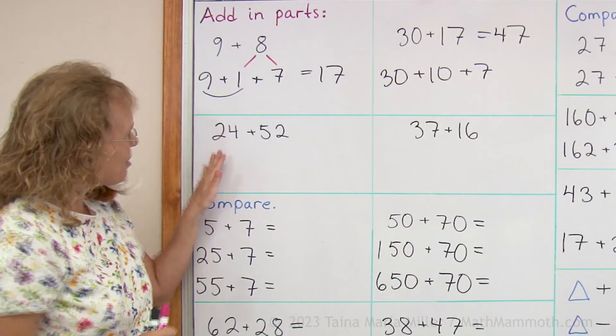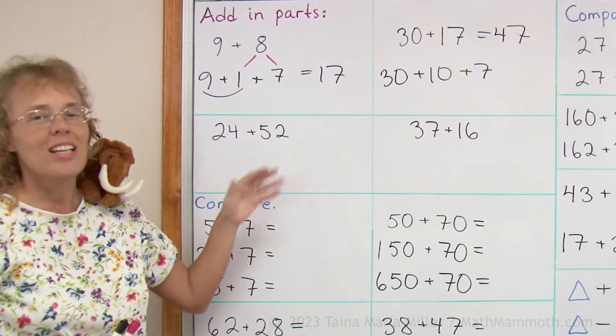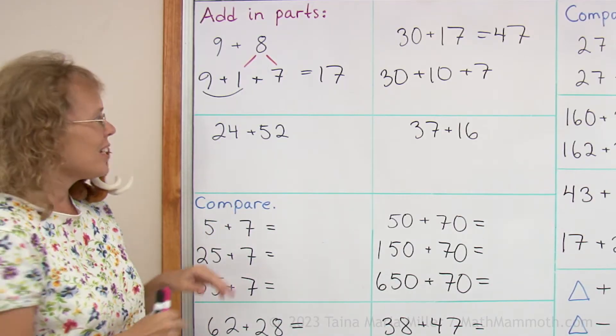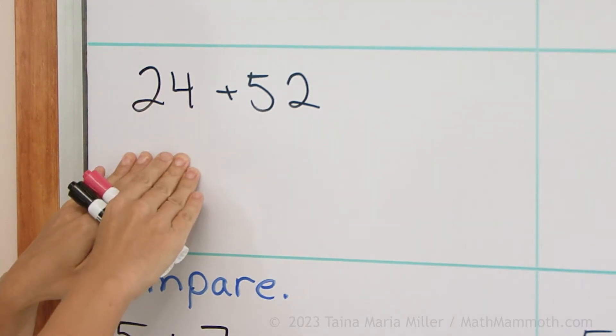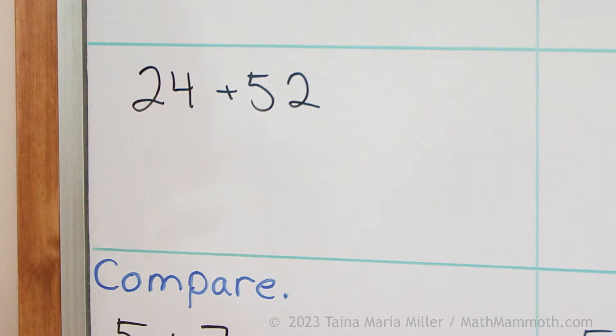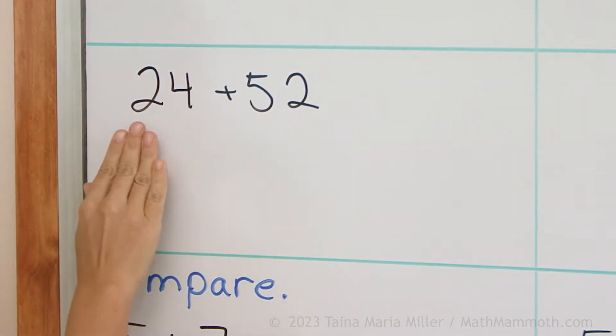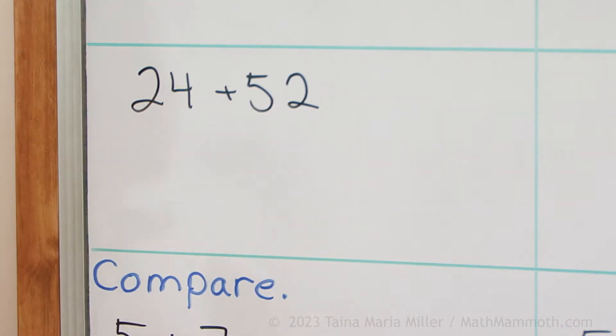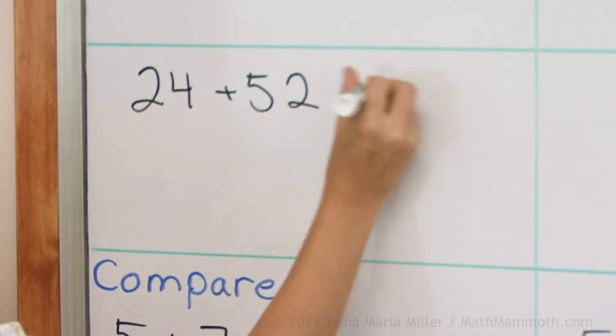Over here, 24 plus 52. When we add in parts, then I will break this number, or think of it as 20 and 4, and this number as 50 and 2. And then I will add 20 and 50, which is 70. And then 4 and 2, which is 6. So I get 76.